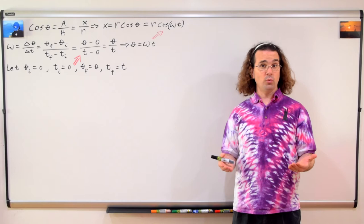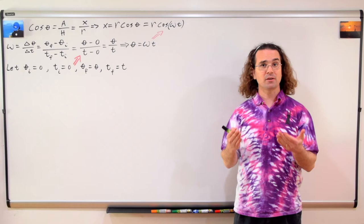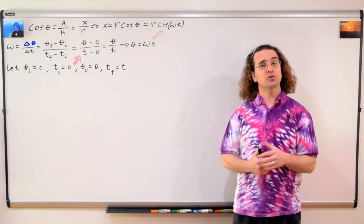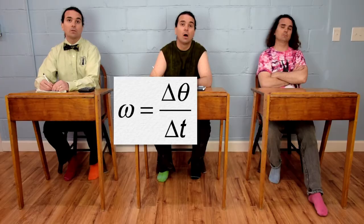We can substitute theta equals omega times t back into the equation for x position of the yellow marker cap in simple harmonic motion. Going back to the equation for angular velocity, what is the angular displacement in radians for one full turn of the turntable? That would be one revolution, so two pi radians.